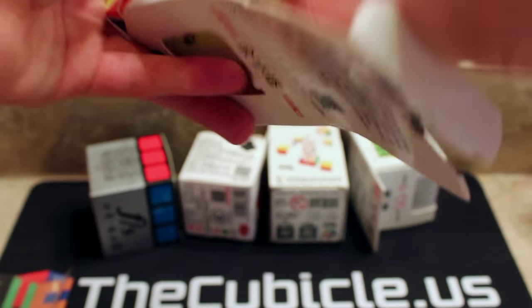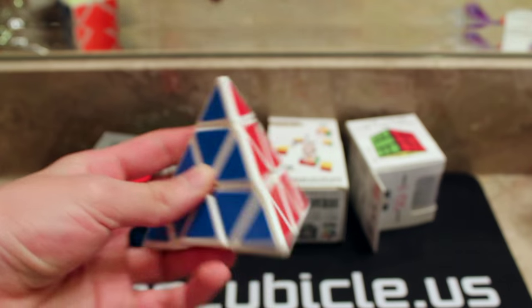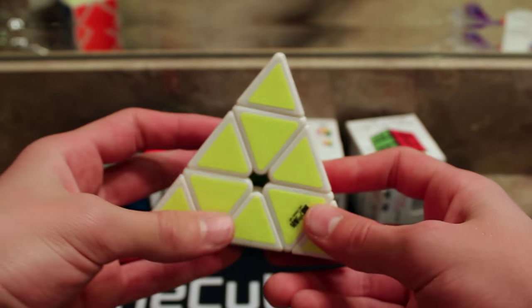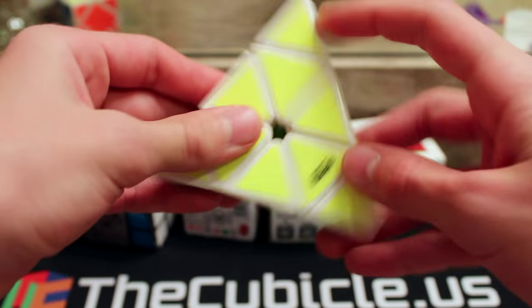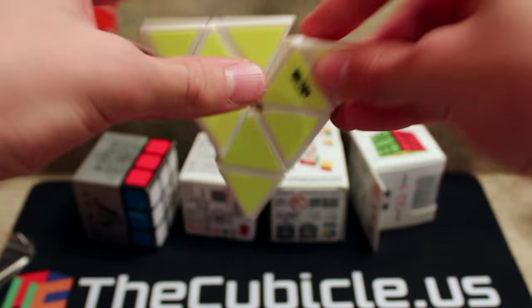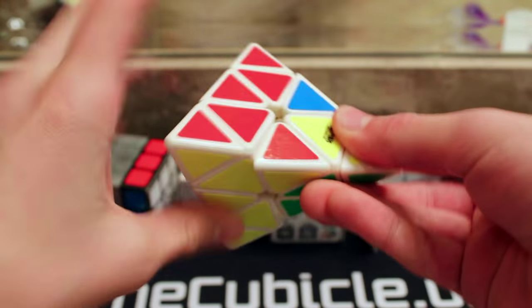Alright, so here's the Chi Yi Pyraminx already partially turned so it could fit in the box. Here it is. First turns. Okay, yeah. As all Pyraminxes, none of them are really great out of the box. But it could have some potential. I don't know. It could be decent. I don't know if it'll beat my Moyu.